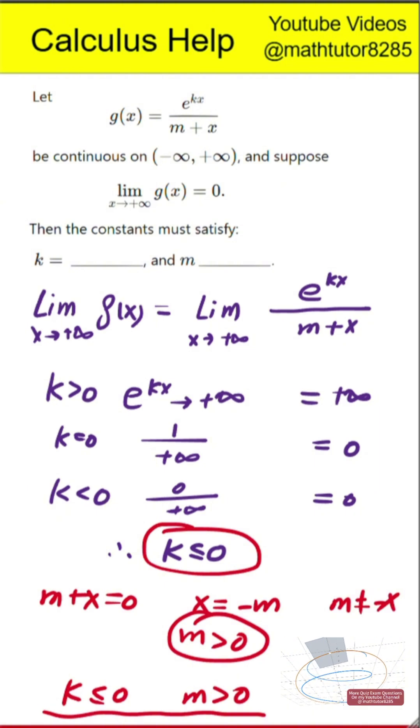There is a common student pitfall. Many students mistakenly think only k equal to zero works, but in fact, k less than zero also works. Always compare exponential growth or decay against polynomial growth when evaluating such limits.